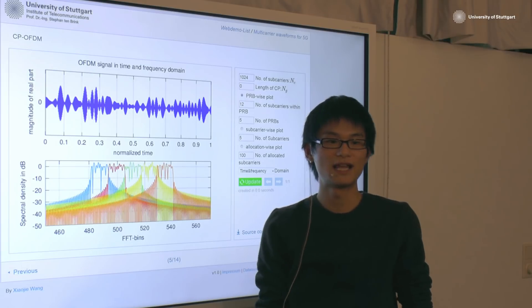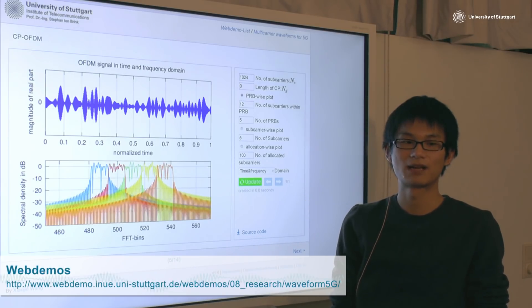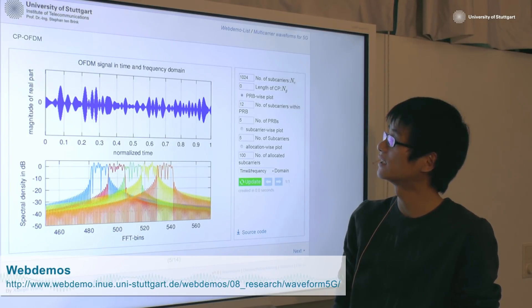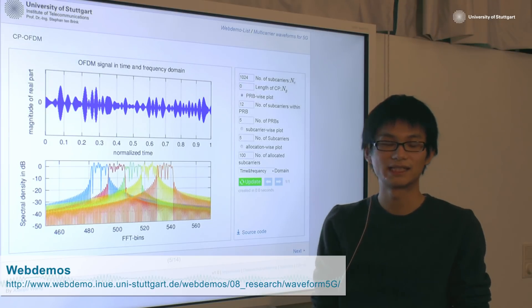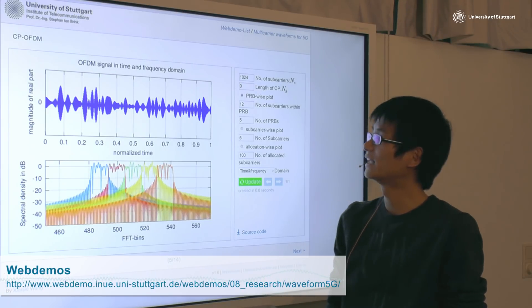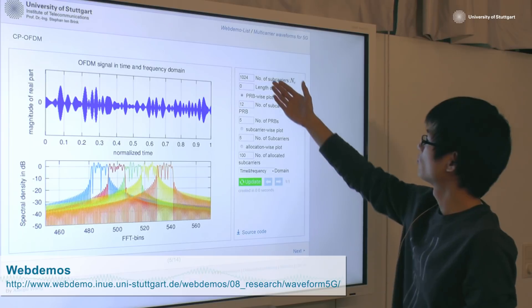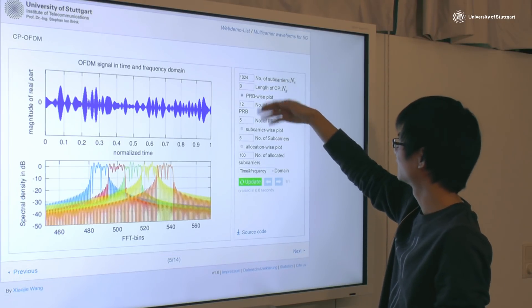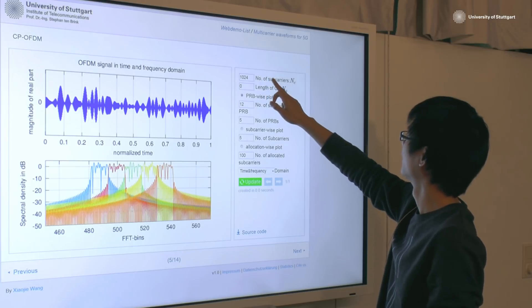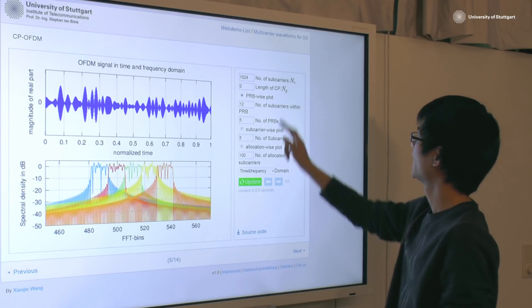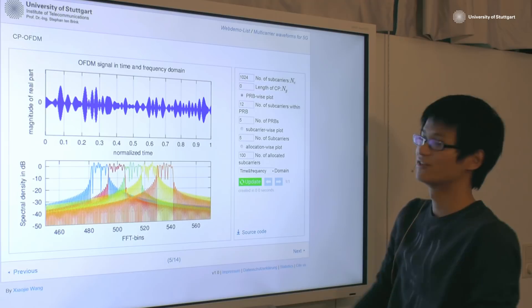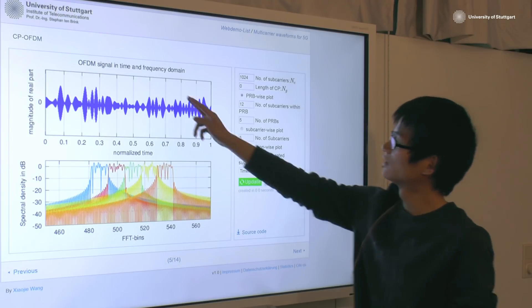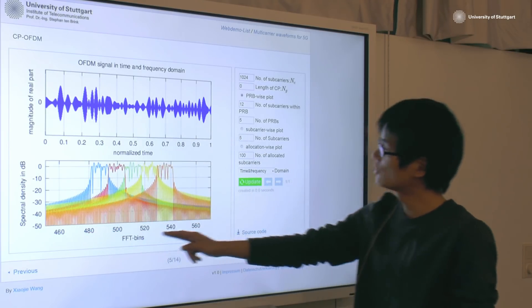Cyclic-prefixed OFDM is today's prominent multi-carrier modulation technique and it is adopted in standards like Wi-Fi and LTE. In this web demo, you are able to change all these parameters such as the total number of subcarriers and the length of inserted Cyclic-prefix.